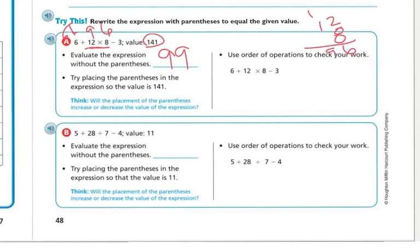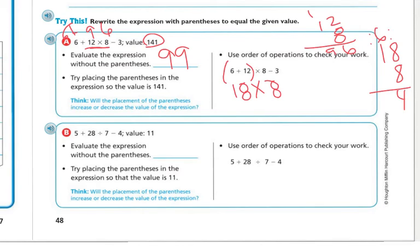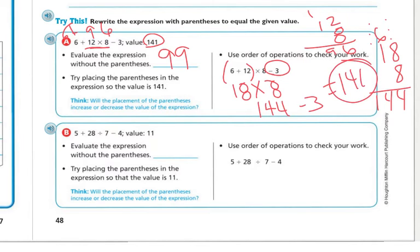To make the expression equal one forty-one, place parentheses around six plus twelve: six plus twelve is eighteen, then eighteen times eight is one hundred forty-four, minus three equals one forty-one. So parentheses go around the six plus twelve to get one forty-one versus ninety-nine. Now let's look at sample B: five plus twenty-eight divided by seven minus four, with a target value of eleven.